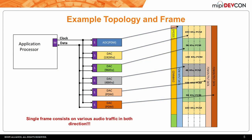Here is an example topology—not a real system, just for explanation. An application processor is connected to six different slaves which can carry different kinds of audio traffic like PDM or PCM. In this topology, the SoundWire frame maps the PDM to the first column, the second PDM to another column, and the PCM is time-multiplexed based on frequency. It's a representation of how easy it is to map any topology into a SoundWire frame. This frame is also flexible in size.